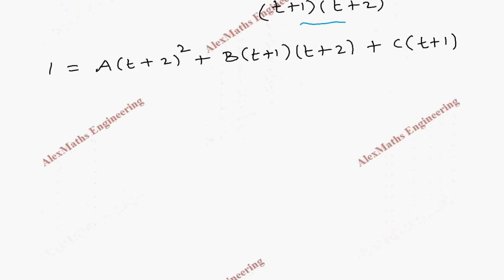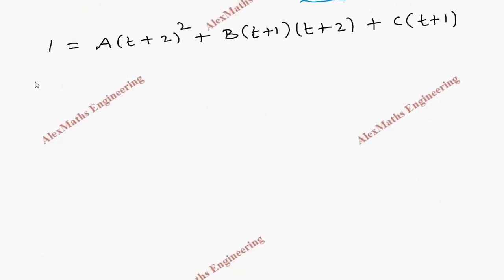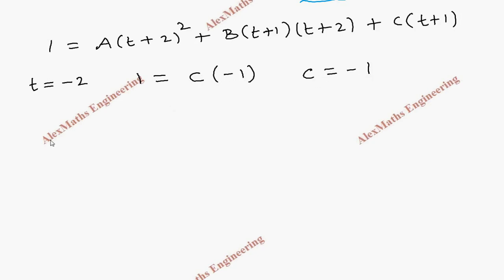To find A, B, and C we substitute arbitrary values of t. When t = −2, the terms with (t+2) become 0, leaving only C(−2 + 1) = C(−1). So 1 = −C, giving C = −1.